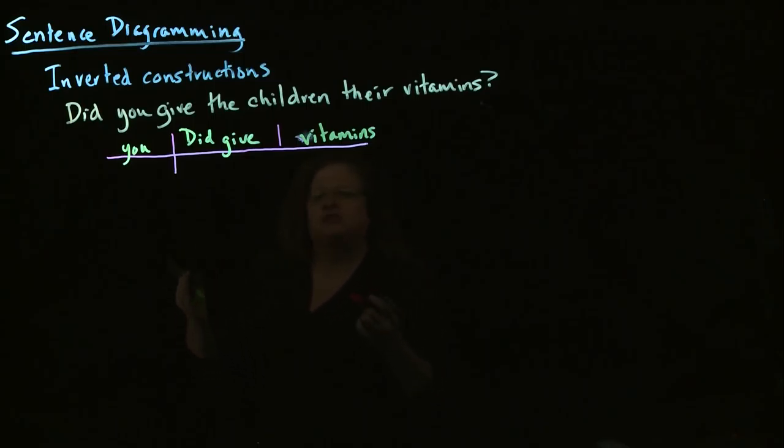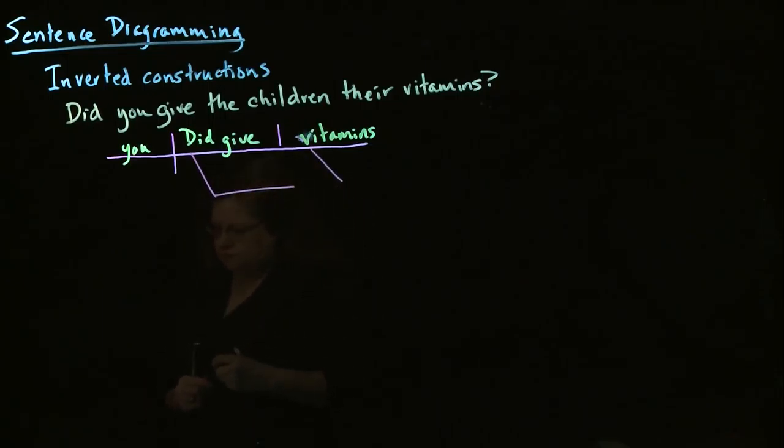If you remember, with the indirect object, we treat it as a prepositional phrase. So we have 'did you give,' and then we have this implied 'to.' We have 'children' with 'their vitamins.'